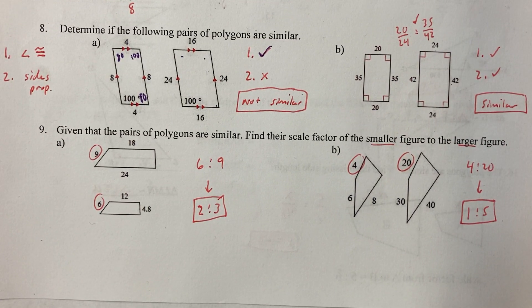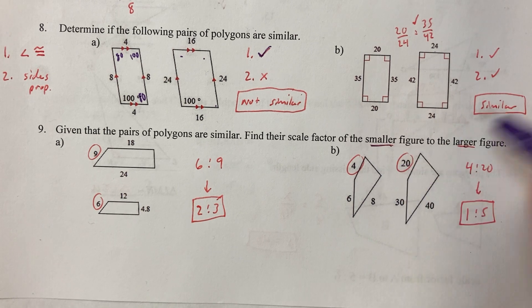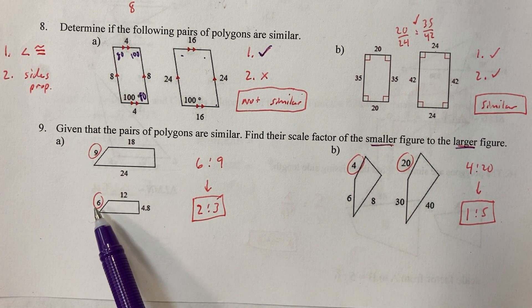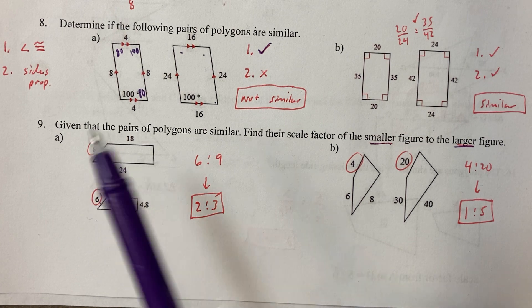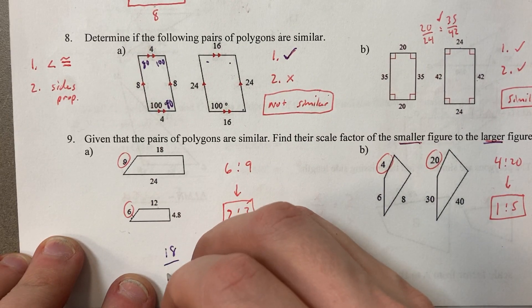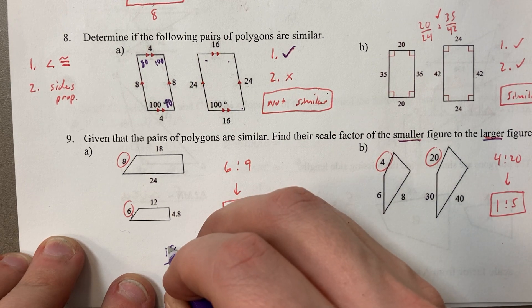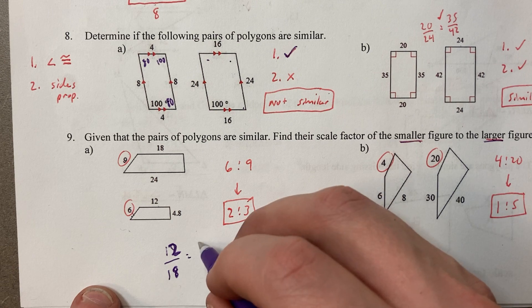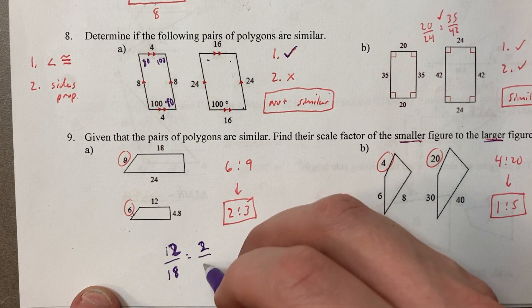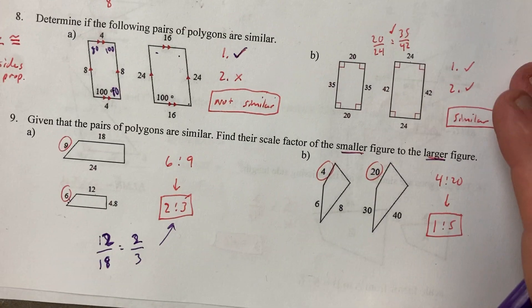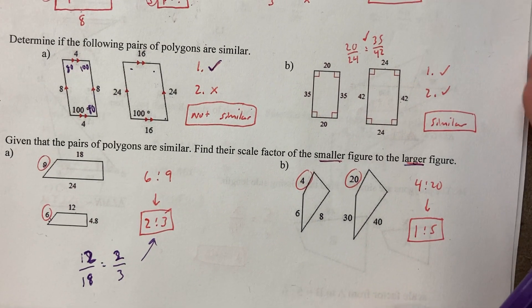Next one. It says find the scale factor. Make sure you're careful. Small to large. Match them up. You could have done 12 and 18 as well. You would have gotten the same thing. They both divide by 6. 2 to 3. Either way, you're going to get the same thing.